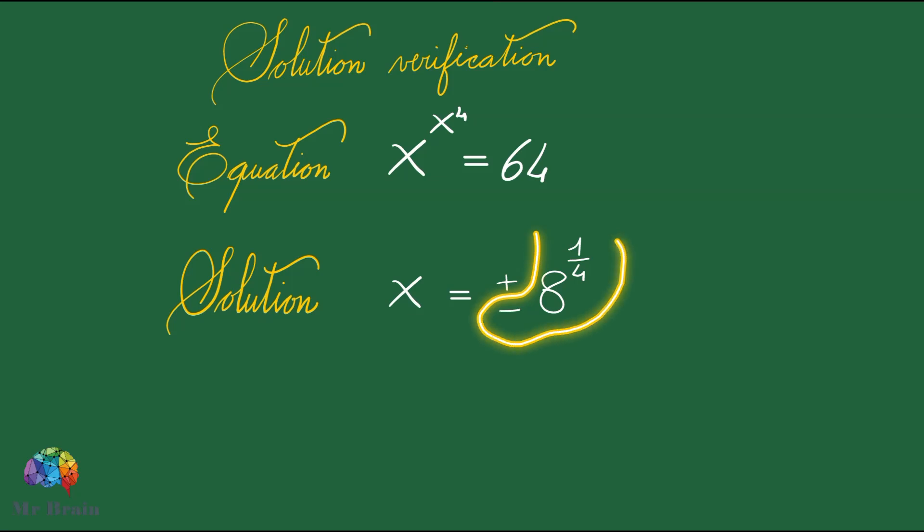Let's now proceed with verifying the correctness of the solutions. We will verify only one of the two solutions, in particular the solution negative 8 raised to the power of 1 over 4. Let's substitute this value for the x's in the original equation. Let's see if the identity occurs.